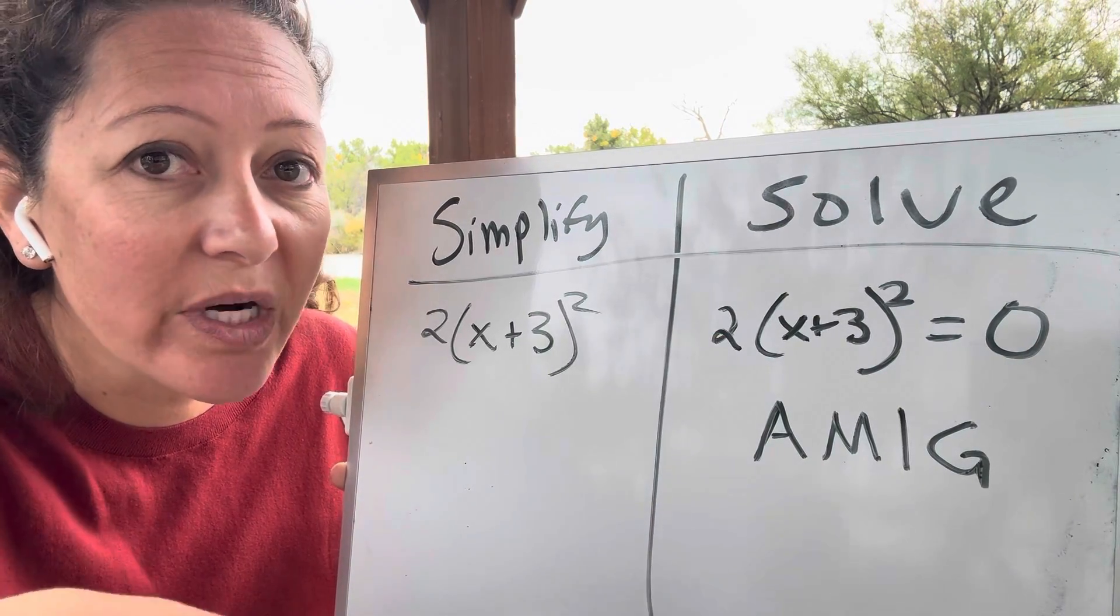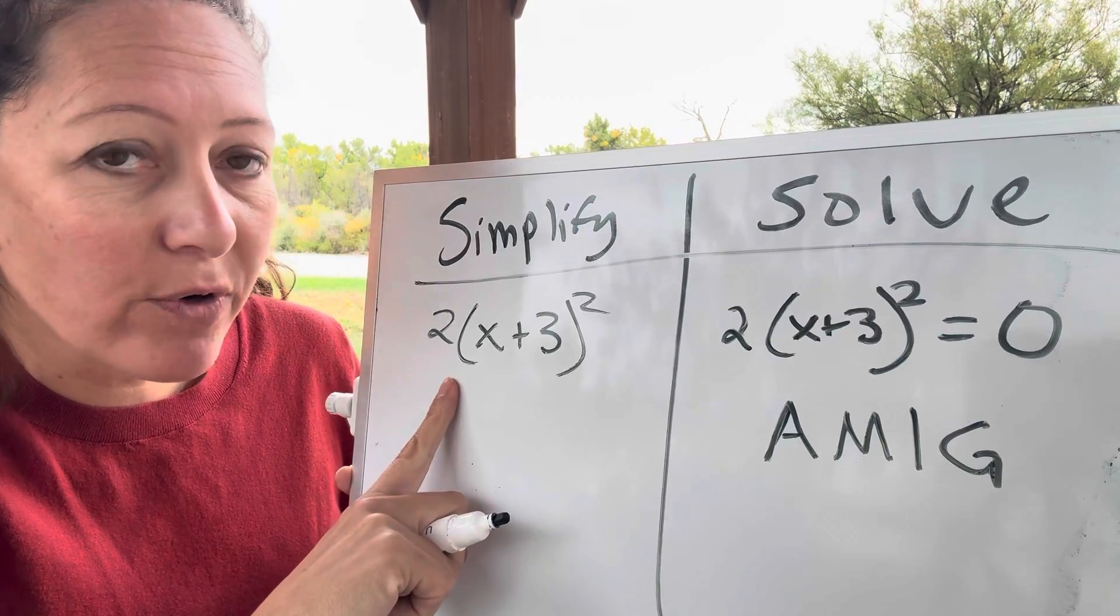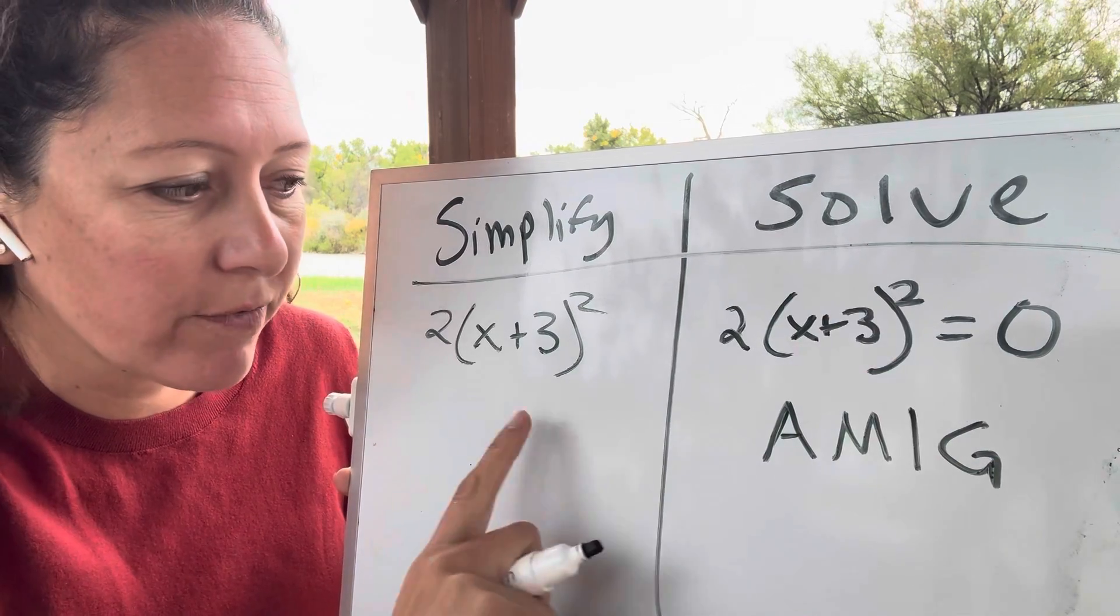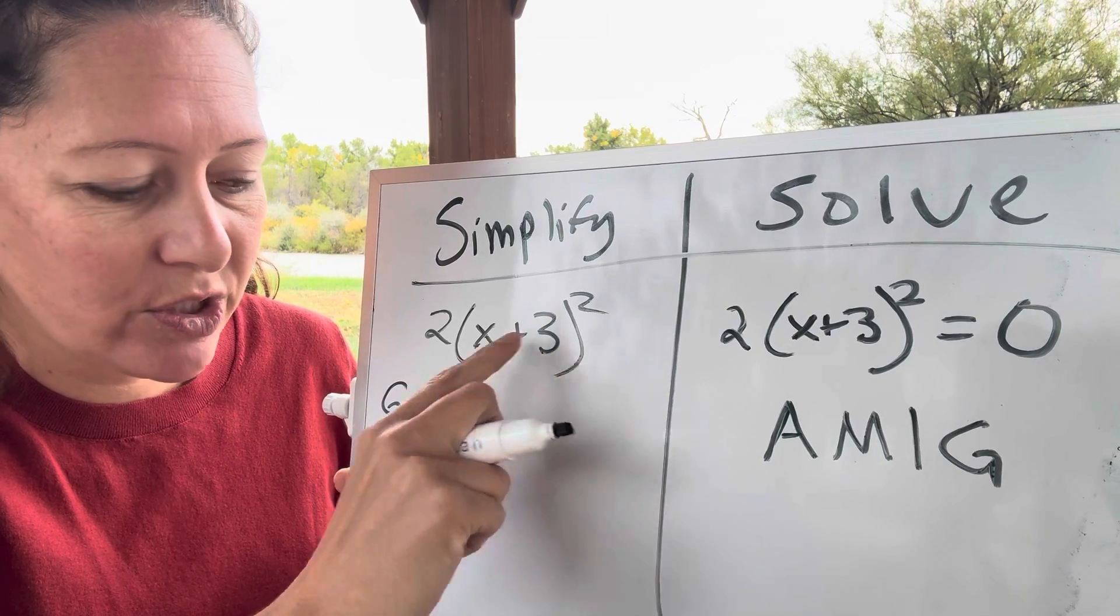But for your complex kiddos, they are just dealing with simplification. They're not having to use this yet to solve for an unknown. And so you can just help see how group would be grouping those two.